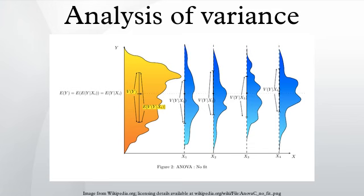ANOVA estimates three sample variances: a total variance based on all the observation deviations from the grand mean, an error variance based on all the observation deviations from their appropriate treatment means and a treatment variance. The treatment variance is based on the deviations of treatment means from the grand mean, the result being multiplied by the number of observations in each treatment to account for the difference between the variance of observations and the variance of means.